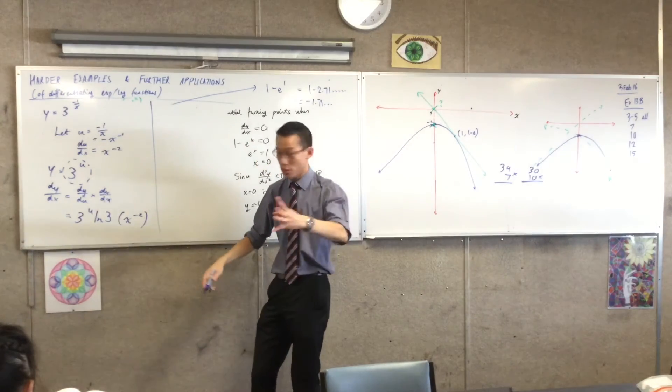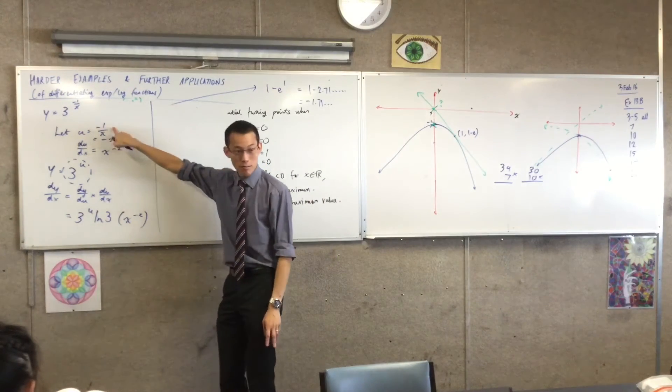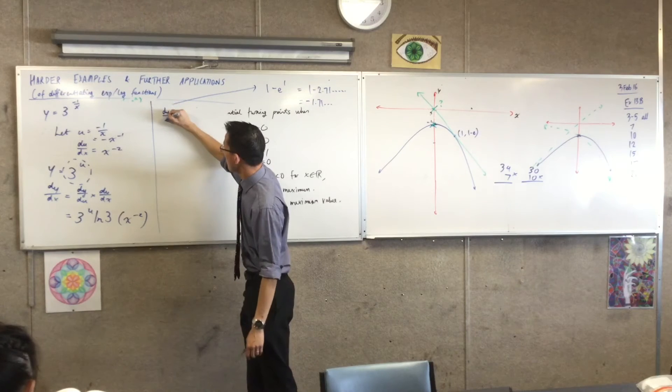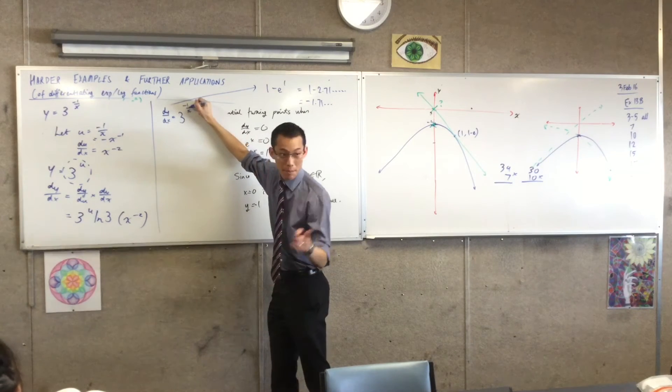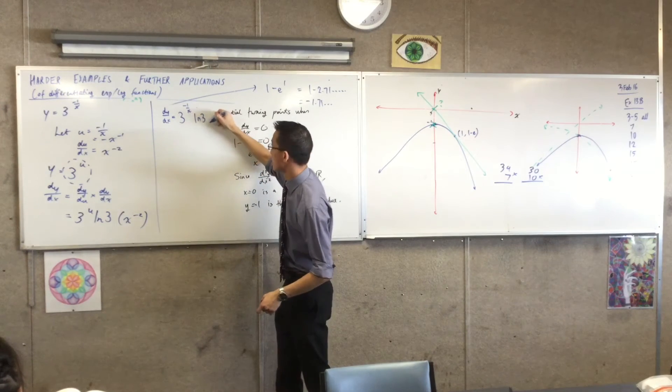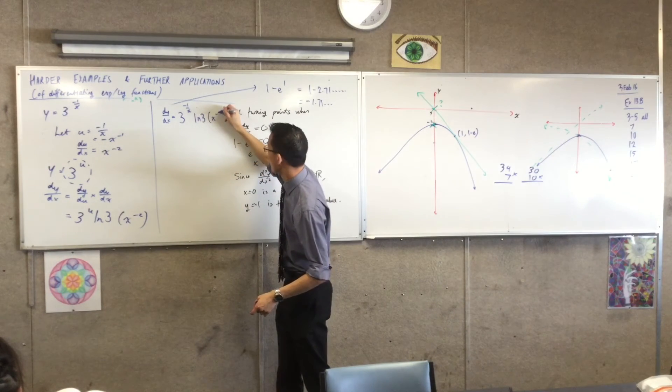So, therefore, I will get rid of the u, which is right here, right? So the actual derivative is, okay, 3 to the power of minus 1 over x, which I began with, times log 3 times x to the power of minus 2.